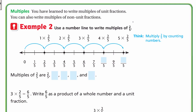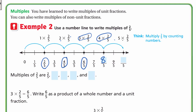To get multiples of any number, you multiply that number by the counting numbers: 1, 2, 3, and so on. So: 1 × 2/5 = 2/5; 2 × 2/5 = 4/5; 3 × 2/5 = 6/5; 4 × 2/5 = 8/5; 5 × 2/5 = 10/5. Those are the multiples of 2/5.